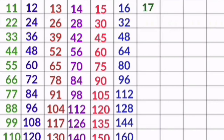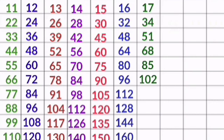17 1s are 17, 17 2s are 34, 17 3s are 51, 17 4s are 68, 17 5s are 85, 17 6s are 102, 17 7s are 119, 17 8s are 136, 17 9s are 153, 17 10s are 170.